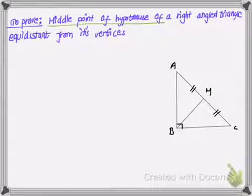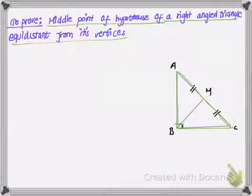So the midpoint of the hypotenuse - this is the right-angled triangle ABC with this angle equal to 90 degrees.